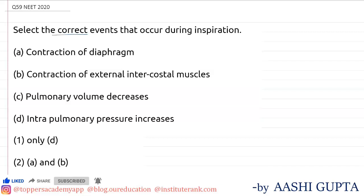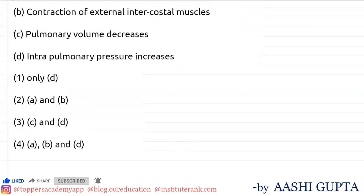In this question we are asked to find out the correct events that occur during the process of inspiration. Inspiration is the process of breathing in. The options given are: first, contraction of diaphragm; second, contraction of internal/external intercostal muscles; third, pulmonary volume decreases; and fourth, intrapulmonary pressure increases.